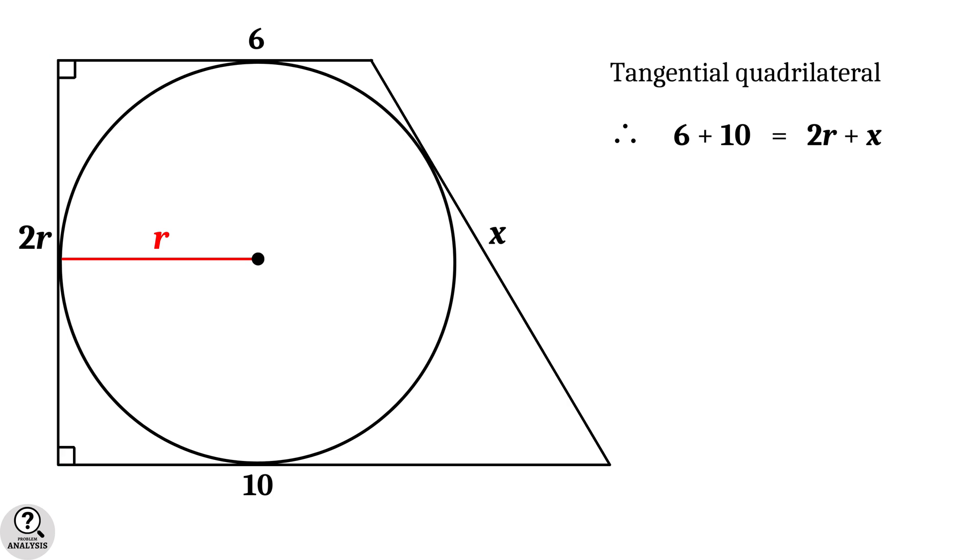The remaining pair will give the sum 2r plus x. That is, 6 plus 10 equal to 2r plus x. And hence, x is equal to 16 minus 2r.